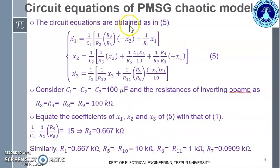The circuit equations are obtained as in 5. All the capacitance here, C1, C2 and C3 are replaced by 100 microfarad and all the resistances of inverting op-amps are taken to be 100 kilo ohms. We can take the values as per our convenience for the circuit design.